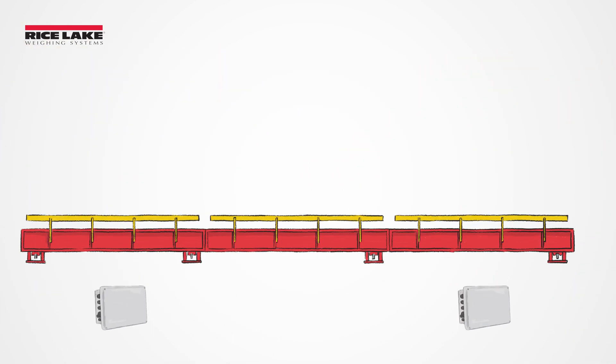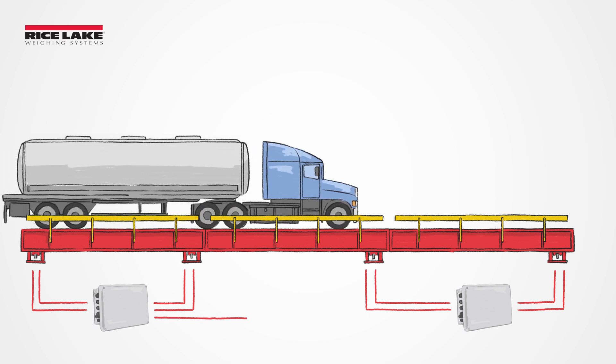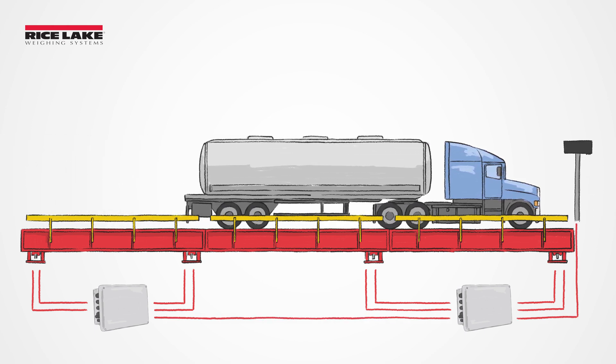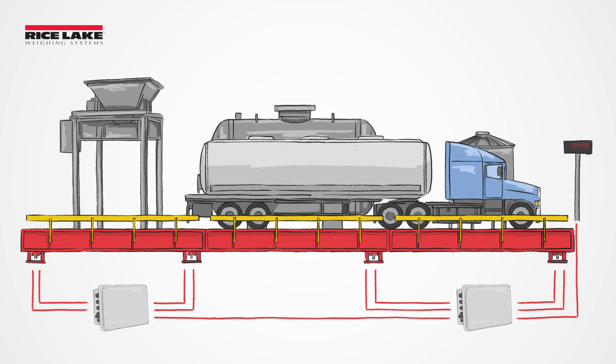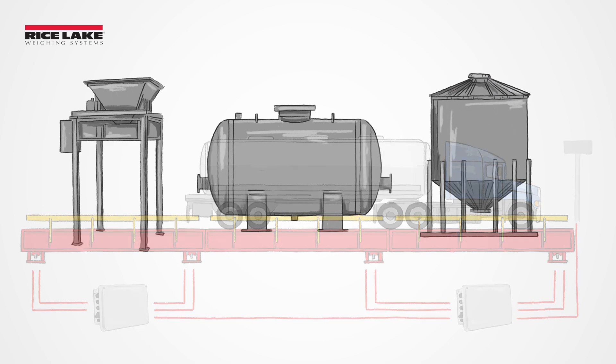By bringing multiple load cells together, junction boxes enable the quick integration of weighing into pre-existing structures such as weigh bridges, large platforms, hoppers, tanks, and silos to create custom scale solutions.